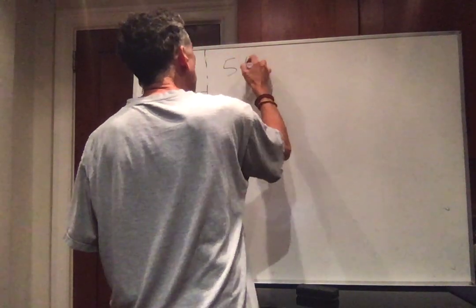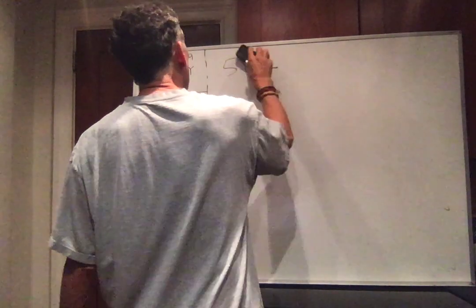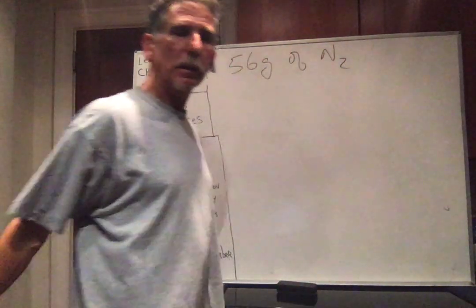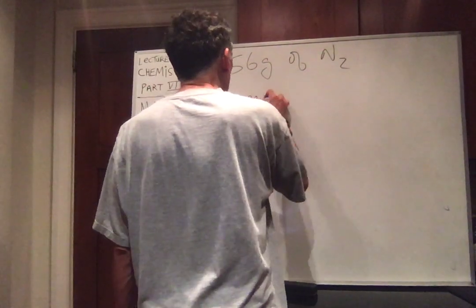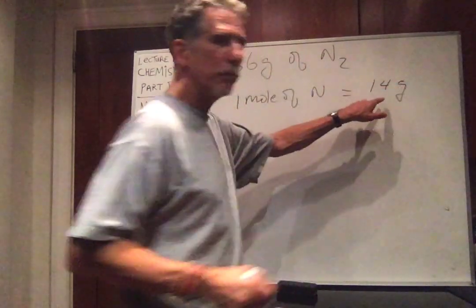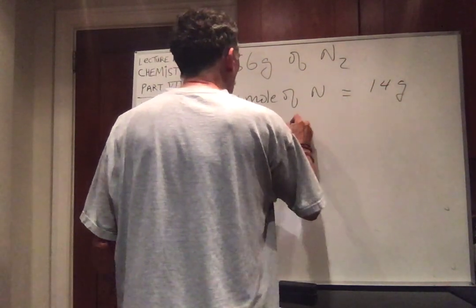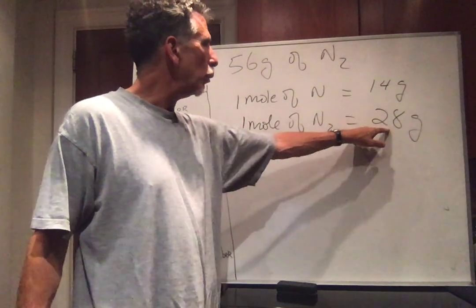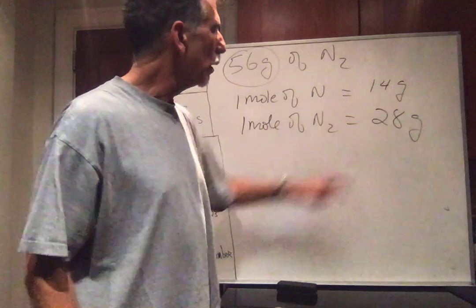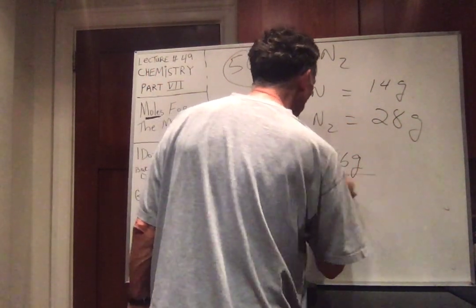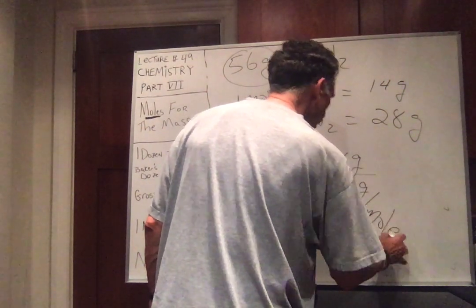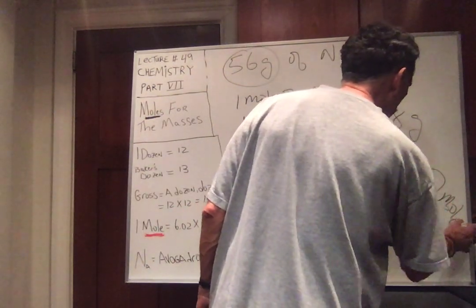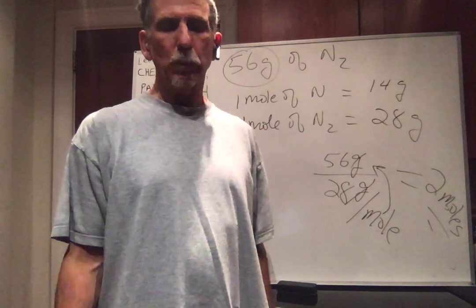Suppose I had 56 grams of N₂. Looking at the periodic table, one mole of N has mass 14, so one mole of N₂ is 28 grams. If I have 56 grams, then 56 grams divided by 28 grams per mole — the grams cancel — 56 divided by 28 is 2. I get 2 moles. It's really not that bad.